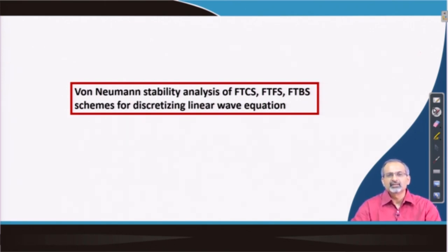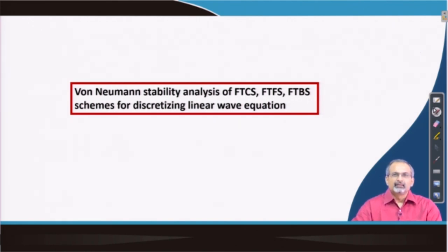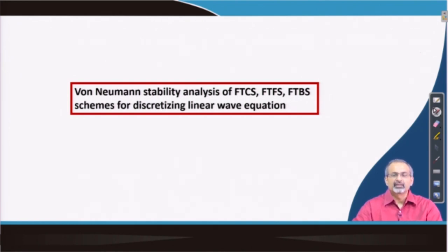The reason we look at parabolic PDEs is because that had a transient term — a time dependent term — as well as a space dependent term. The wave equation also has a time dependent term and a space dependent term. An intuition could be: why not try some of the schemes that worked for parabolic partial differential equations in the case of linear wave equation? But we have to be careful — from our past experience, explicit schemes could become unstable, either unconditionally unstable or at best conditionally stable, while unconditional stability from explicit schemes is rather rare, if not impossible.